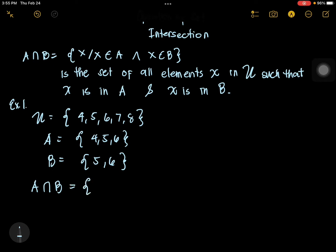The answer here is 5 and 6. It's 5 and 6 because X should be in A and X should be in B — so it's just the common elements of A and B. 5 and 6 are common; they are the elements found in both set A and B. So our answer is 5 and 6.